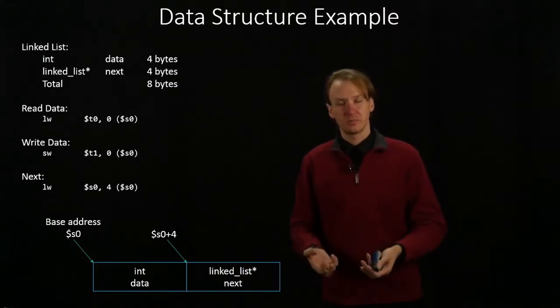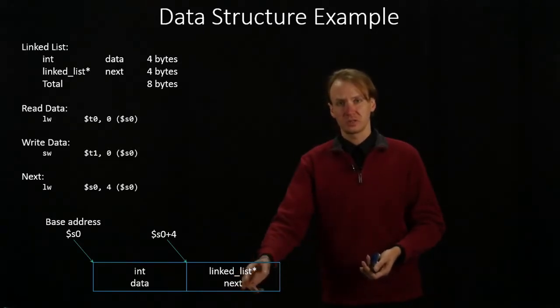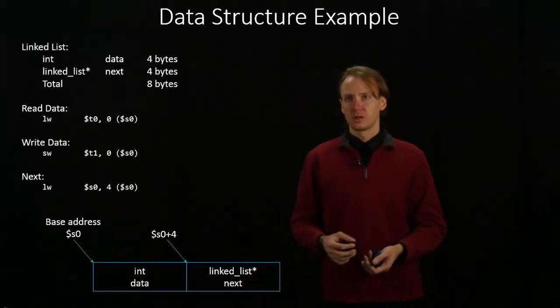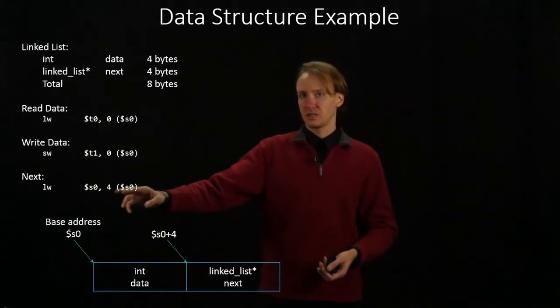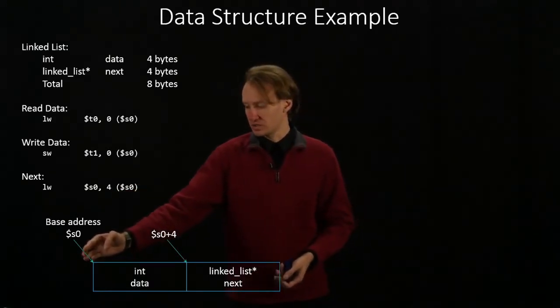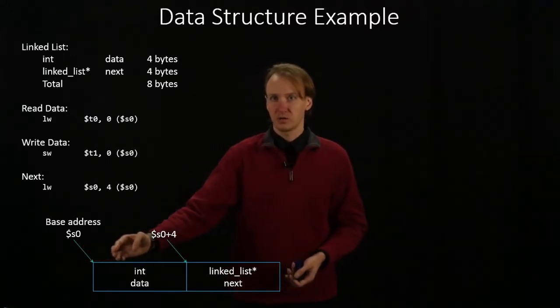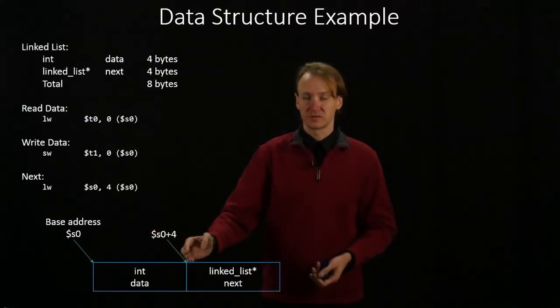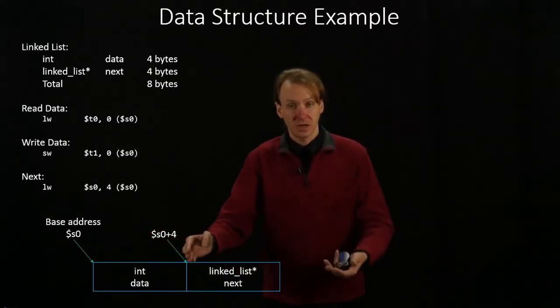If I want to go find the next element in my data structure, then I'm going to be interested in this next pointer. So in that case, I go to S0 plus 4, because my data structure starts at S0, my first element consumes 4 bytes of space, and then my next pointer can start.